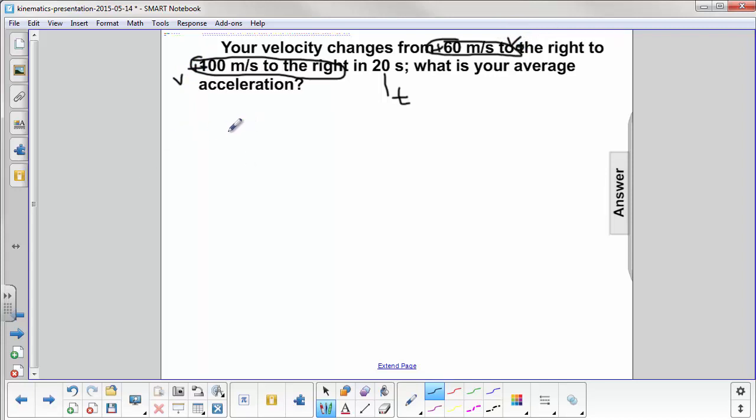So the equation would be V final minus V initial over your elapsed time. So we'll pull the answer out, see how they did.